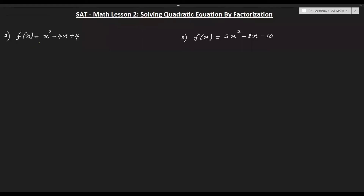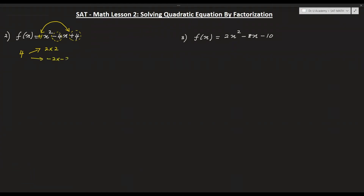Now we will discuss another question. Here we have plus 1 as the coefficient of x squared, minus 4 for x, and plus 4 as the constant. Multiply those two: 1 times 4 gives 4. Check all possible factor pairs: (2 × 2), (−2 × −2), (4 × 1), (−4 × −1). Adding each pair gives 4, minus 4, 5, or minus 5 respectively. The coefficient of x is minus 4, so the matching combination is (−2 × −2).